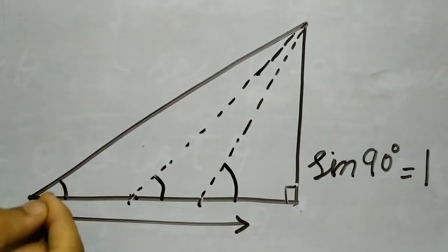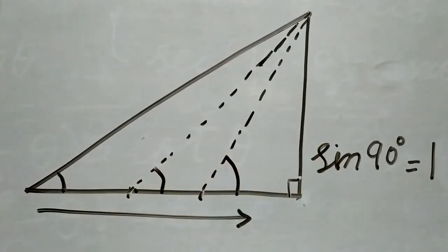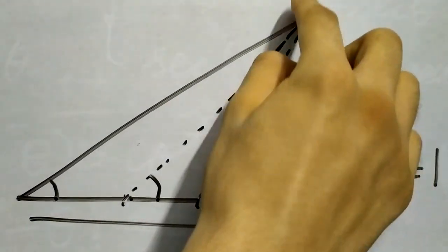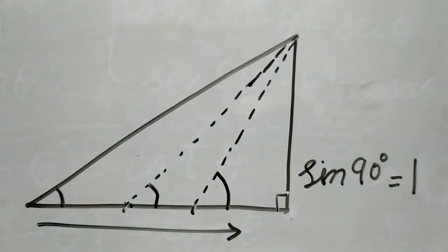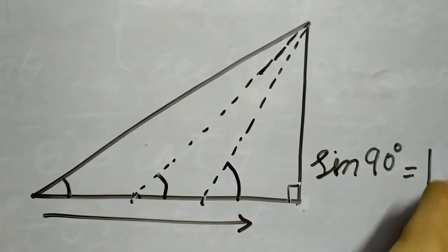So this θ approached 90 degree. And then when it finally coincided, the perpendicular became equal to the hypotenuse, and we got sin 90 degree as 1.